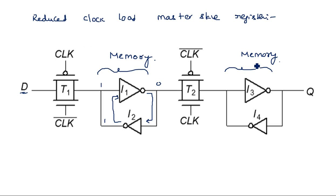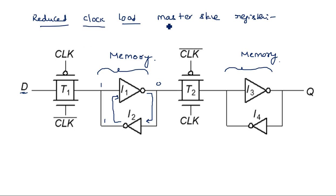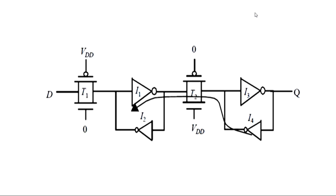This is the reduced clock load master-slave register, where the memory is in no way directly related to the clock. The clock is only used to control the transmission gates — there is no direct or indirect connection between clock and memory. That is why the load on the clock signal is directly reduced, hence the name reduced clock load master-slave register.